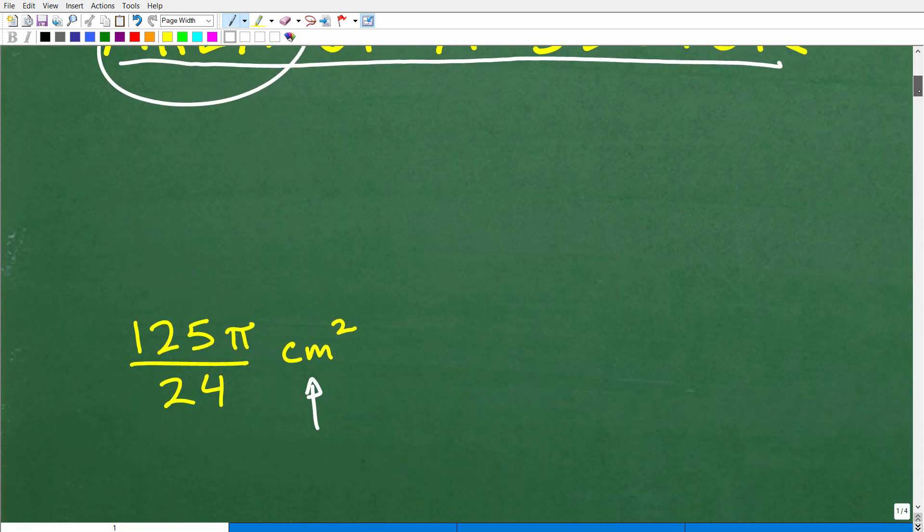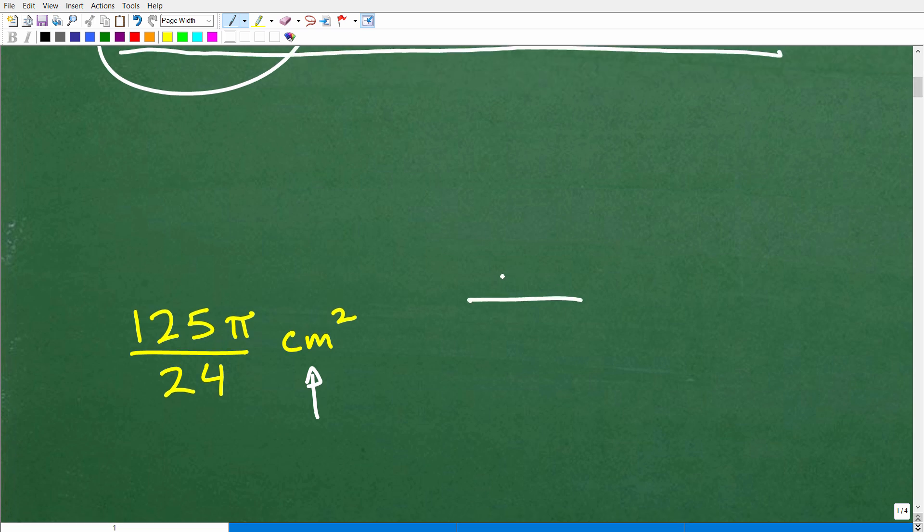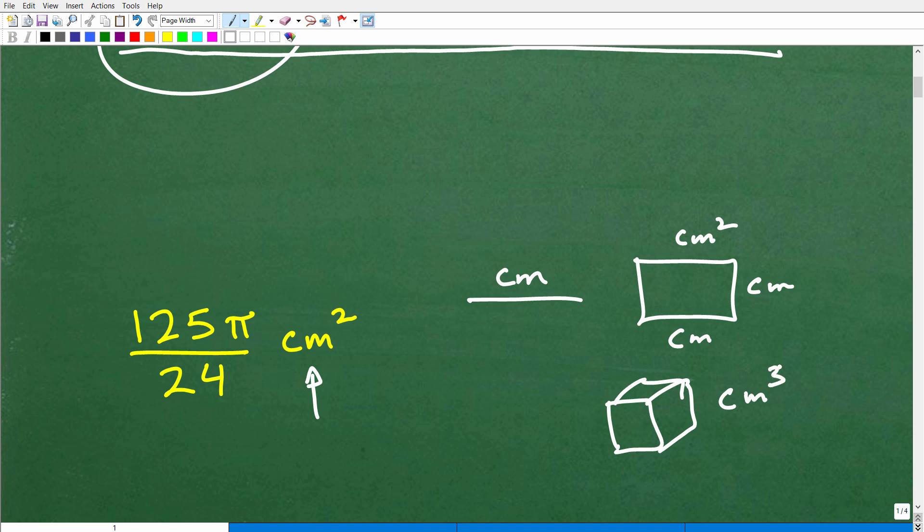Remember, let's just do this real quick. If we're talking about distance, that's centimeters, just one. If we're talking about length, it's just one unit of measure like centimeters. If we're talking about area, centimeters and centimeters, this is centimeters squared. And if we're talking about volume, we're talking about centimeters cubed. So these units of measure matter.